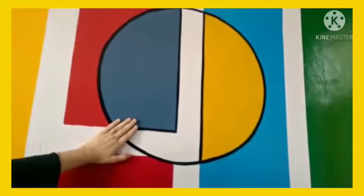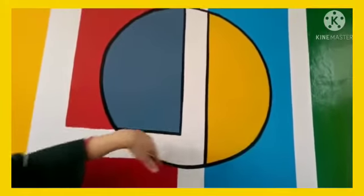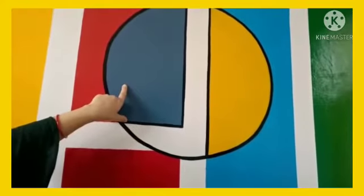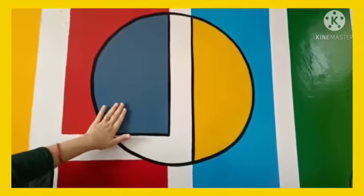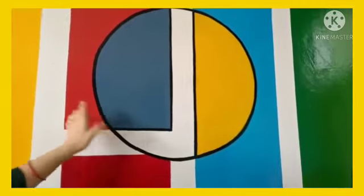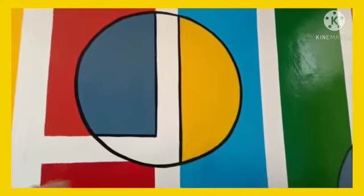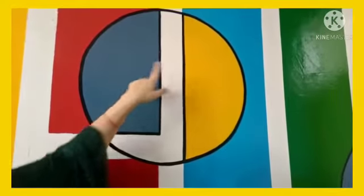Our first shape is circle. Round, round, circle. Students, this is a circle. It has no sides and no corner.